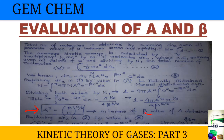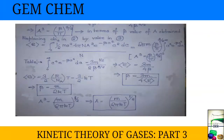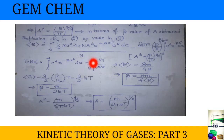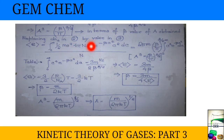Now we will find the value of beta. We replace dNc in the average kinetic energy equation with the value from the Maxwell distribution equation. Substituting this expression for dNc into the average kinetic energy formula, we obtain the corresponding integral expression for the average kinetic energy.